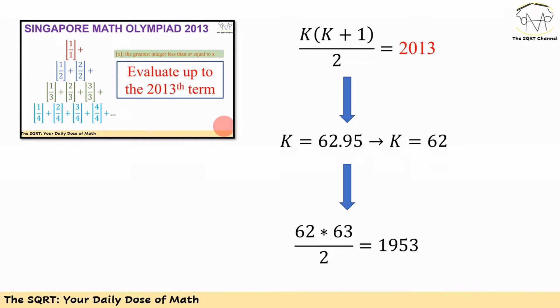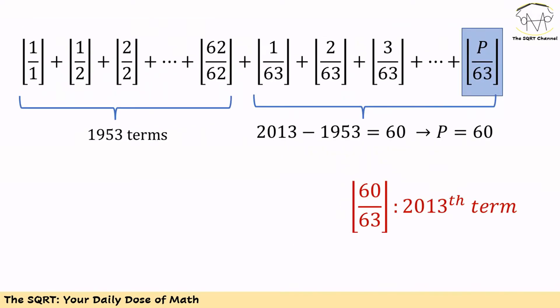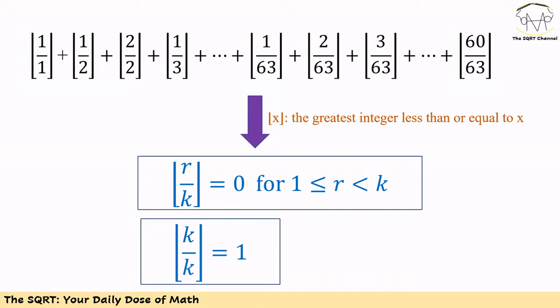Using K equals 62 gives 1953 total terms, which is less than 2013, so we need to add more terms. We need 60 additional terms — the first new term is floor of 1 over 63 and the last term we need to add is floor of 60 over 63. So floor of 60 over 63 is our 2013th term, and with that we have the whole expression to evaluate.